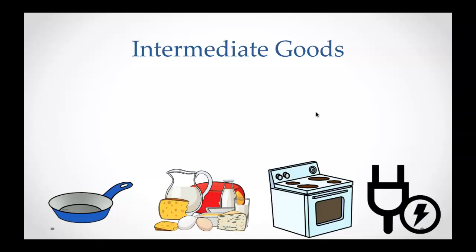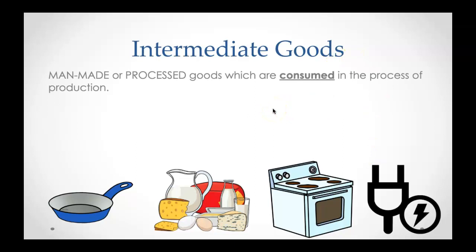Intermediate goods — I accidentally forgot to put this in the study guide, so you'll need to turn to the back page if you're a fall 2020 student. If you're anyone after that, it's already in the new study guide. An intermediate good is a man-made or processed good which is consumed in the process of production. Get that in your study guide.